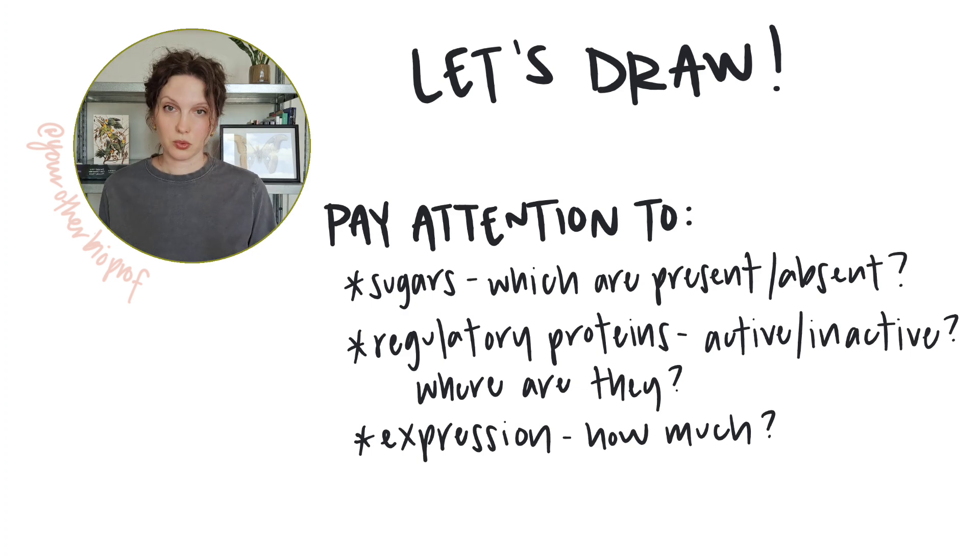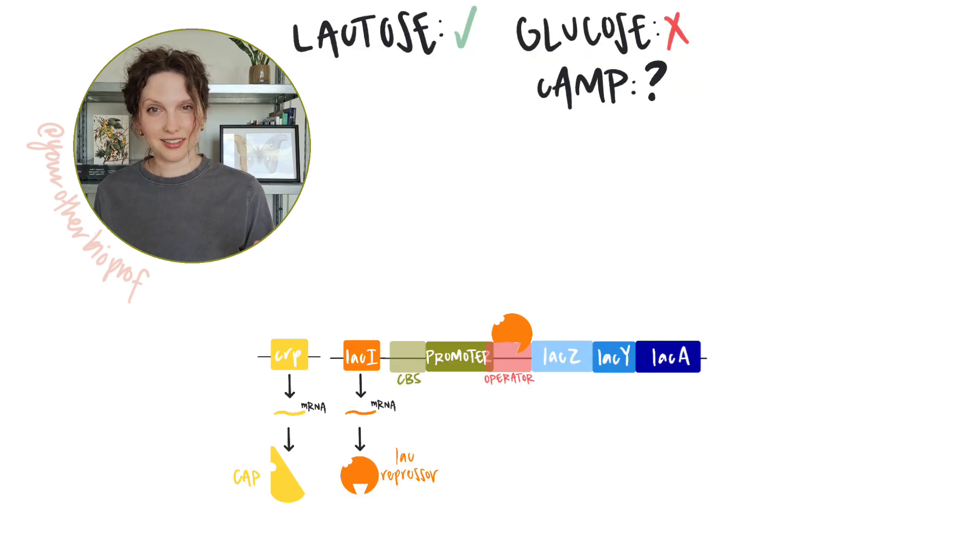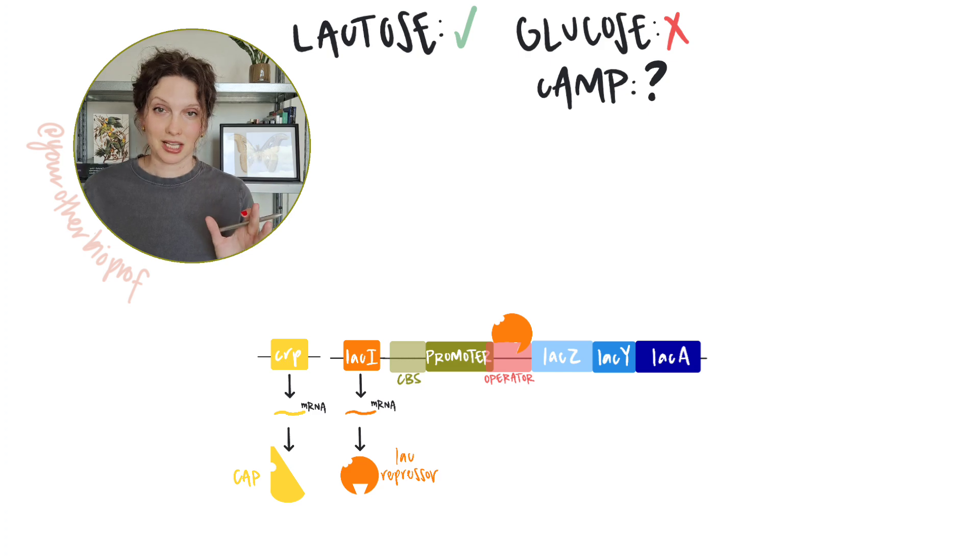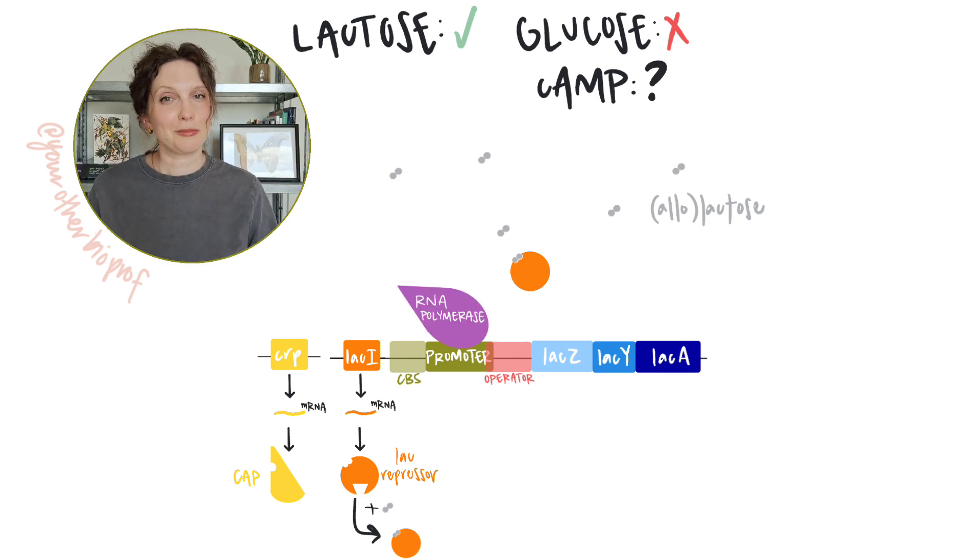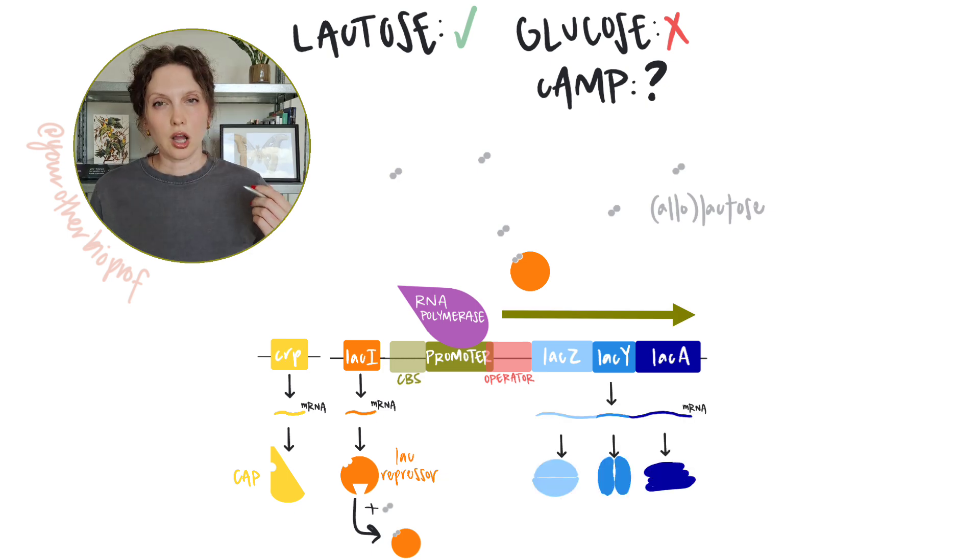So let's start with this scenario where we have lactose, but no glucose. This should look pretty familiar, right? So on the lactose side of things, we've got lactose available here. And that means that some of that lactose is going to be converted into allolactose, which is going to bind the lac repressor, inactivating it. Once it's off the operator, RNA polymerase is going to be able to come in and transcribe.